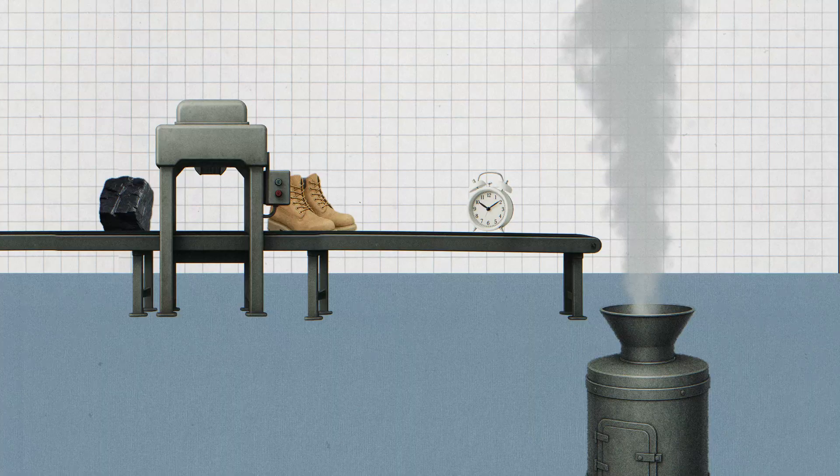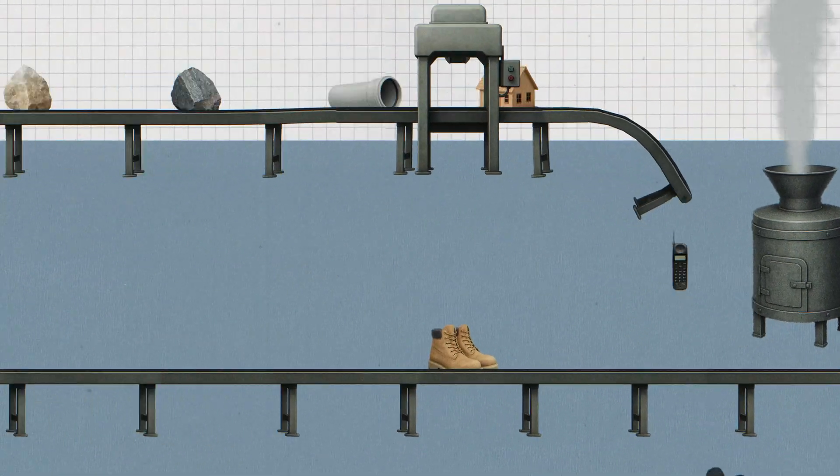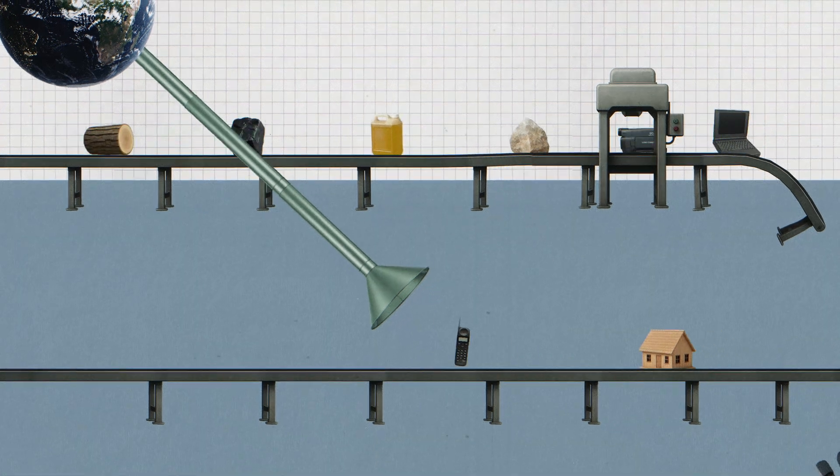So our products do not go back into a natural cycle, which takes me to the circular economy, which is basically trying to bend that model around and bring the components of consumer goods back into the cycle.